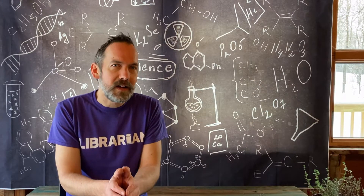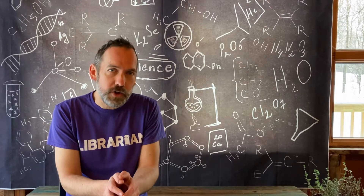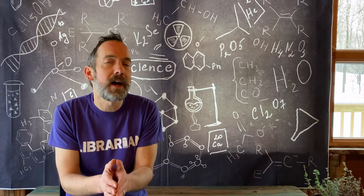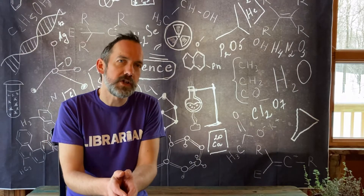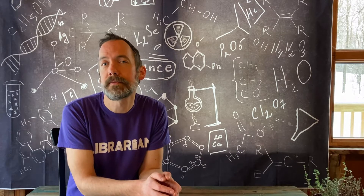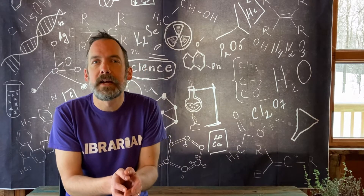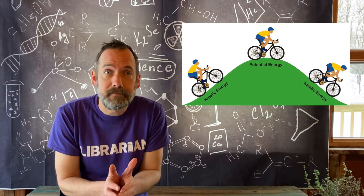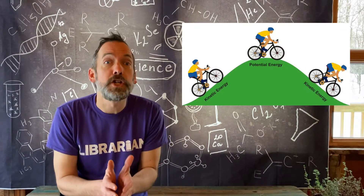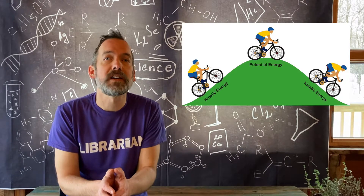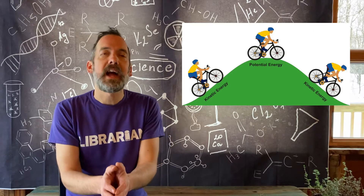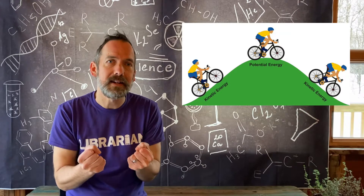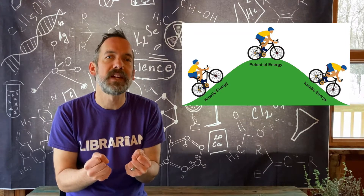Which leads me to the concepts of potential and kinetic energy. Potential energy is the energy held by an object because of its position in relation to other objects. For example, think about the water being held back by a dam, a bike at the top of a hill, a yo-yo before it's released, a kid at the top of a slide. A catapult exhibits potential energy when it is pulled back and ready to be released — it's in that tension.